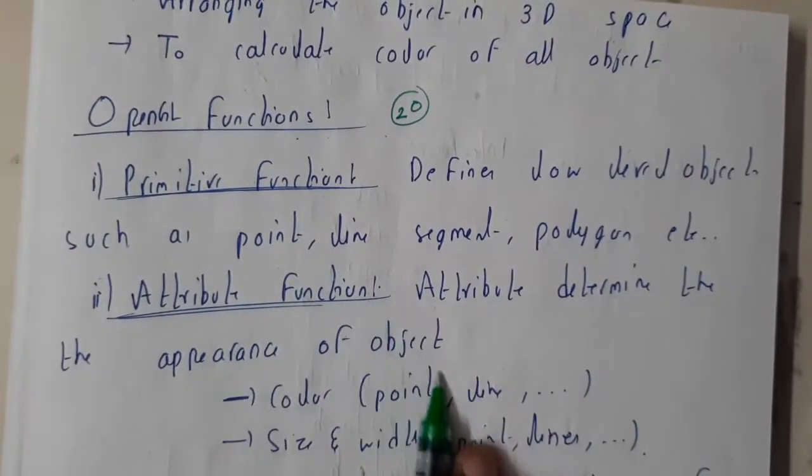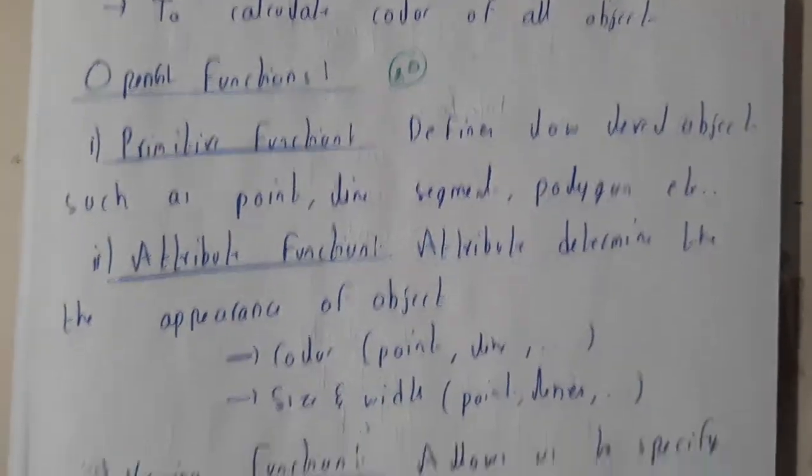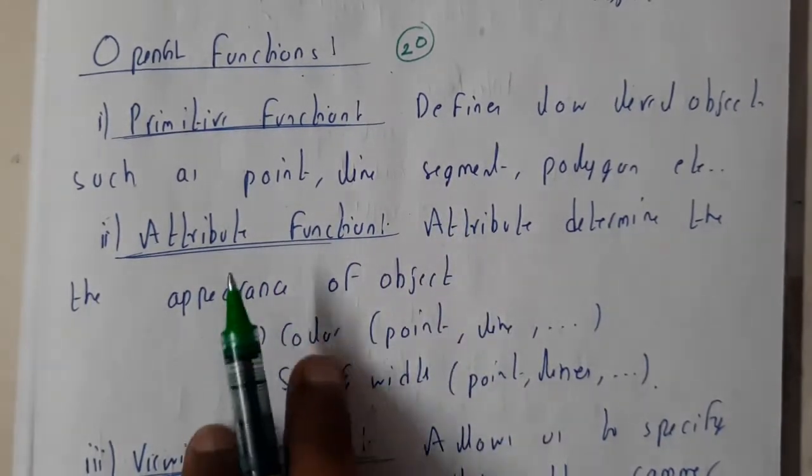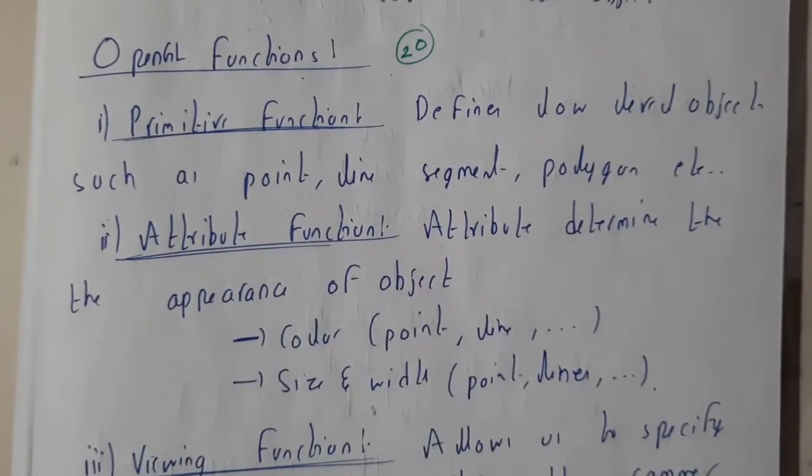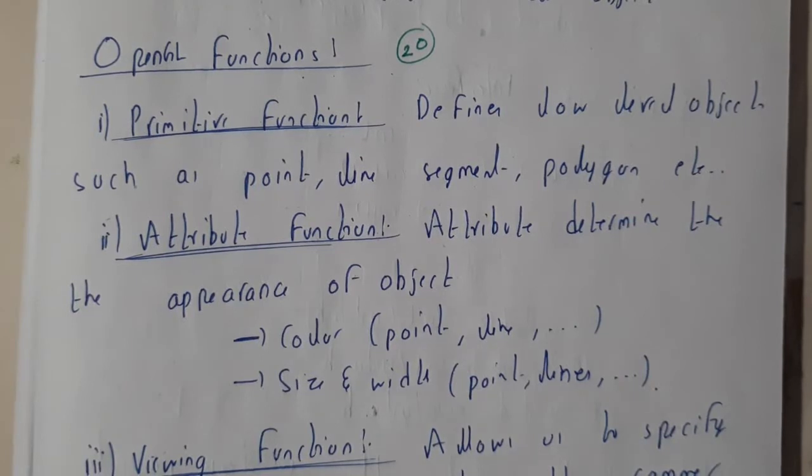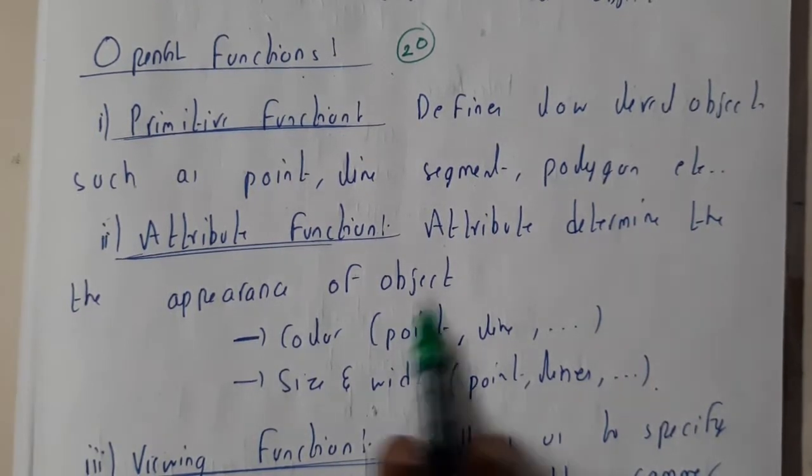Sorry for that, I was just searching. It's written right here. Now let us go through attributes. Attributes are the exact location of a point, its size, width - that is your attributes.